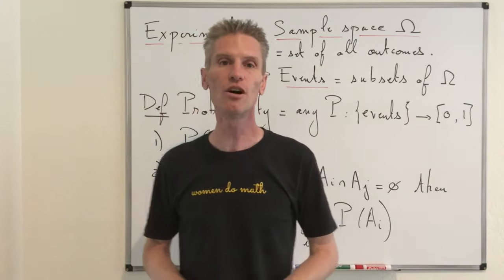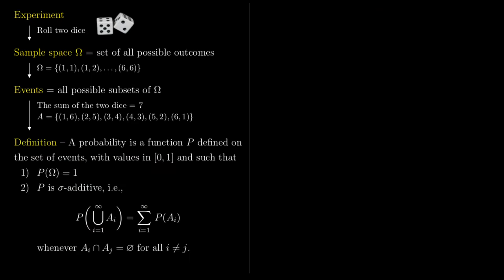So for the rest of this video, keep in mind this framework summarized here. Each time you deal with a probability problem, you start with an experiment like rolling two dice. Behind this experiment there is a sample space — the set of all possible outcomes. Events are all the possible subsets of Omega. A probability is any function defined on this set of events, satisfying the two axioms: first, P(Omega) = 1, and second, sigma additivity.